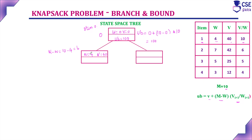Including item 1 will not violate the problem constraint — the total weight must not exceed the maximum capacity of 10, and profit should be maximized. The upper bound value is: V = 40 plus (M minus W = 6) multiplied by the value-by-weight ratio of the next item, which is 6. So we get the upper bound value 76 for the left subtree (with item 1).